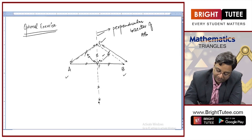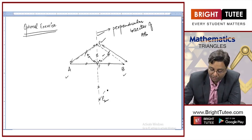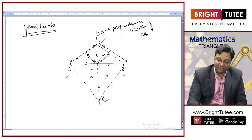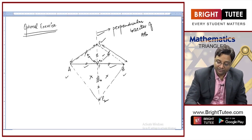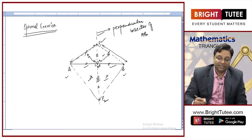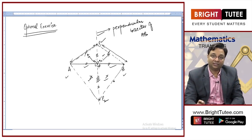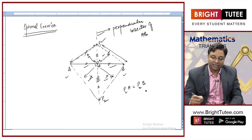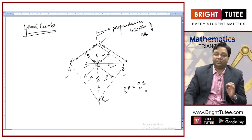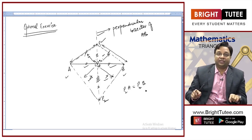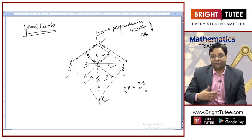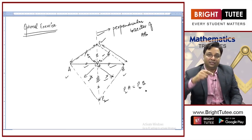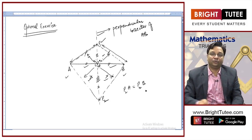For that matter, take any point on this line, let us take P2. When you join P2 with B and A with P2, these two triangles are congruent by Side-Angle-Side. Again these two sides are equal — this is a common side and the angles are 90 degrees each. By SAS congruency and CPCT, P2A equals P2B. In brief, every point on this perpendicular bisector is equidistant from A and B. Conversely, all points equidistant from A and B form the perpendicular bisector of segment AB.